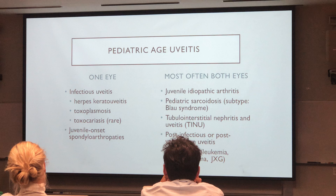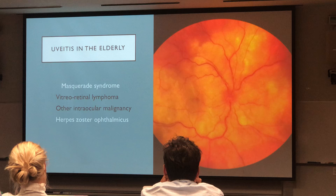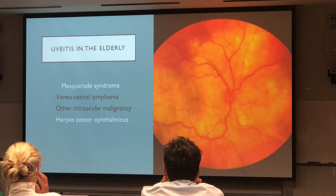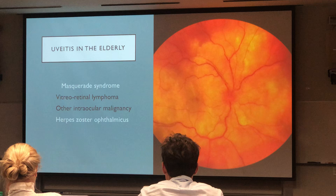On the other spectrum of age, when I see someone 70 or 80 years old, very high on my list is a masquerade syndrome. Here's an example of vitreoretinal lymphoma — you can see that creamy appearance there. Other conditions to consider include Grippy Saucer and Alzheimer's.